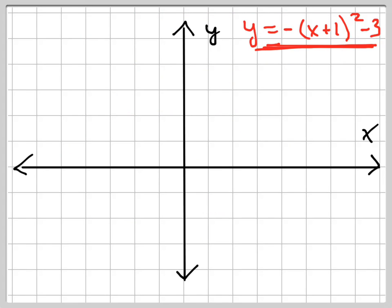That's what they're wanting us to do. So notice that the a is negative, a is less than zero, so it opens down. And also notice that the vertex is equal to the opposite of what's in there, negative one, comma whatever's outside here, negative three. So my vertex is negative one, negative three, right there. That's my vertex.